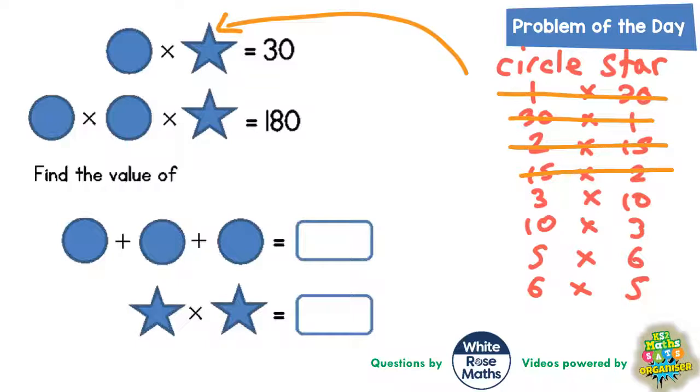The next pair to try is the circles being worth 3 each and the star being worth 10. Well, 3 times 3 is 9 and 9 times 10 is 90. Again, that's no good, we're trying to make 180. What about the other way round, the circles being 10 and the star being 3? Well, 10 times 10 is 100 and 100 times 3 is 300. Again, no good folks, we're trying to make 180.